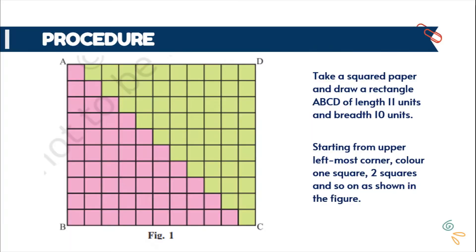Now let us start with the procedure. First of all, take a squared paper and draw a rectangle ABCD of length 11 units and breadth 10 units as shown in this figure 1.